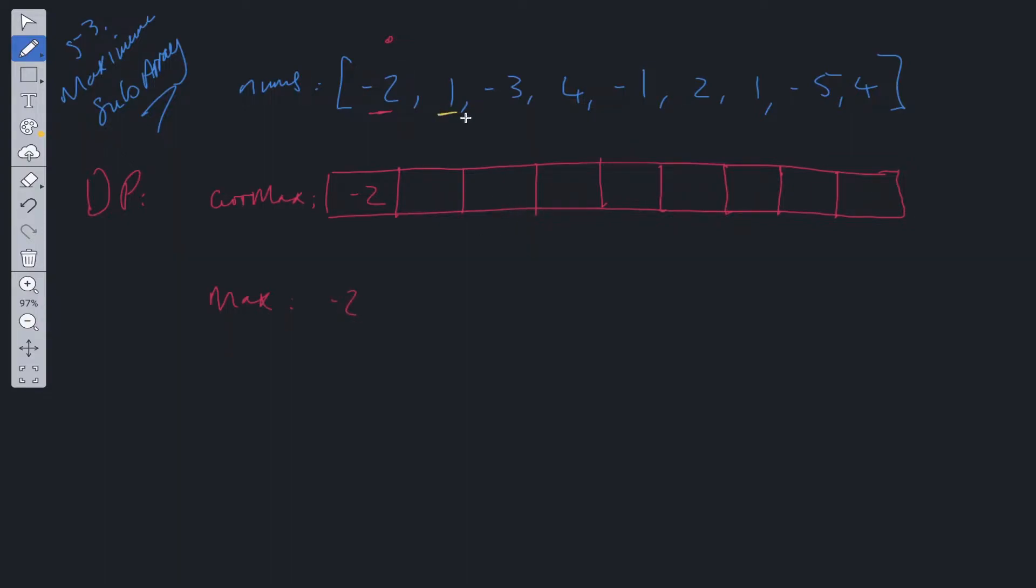If we move on to the next position, the current max here can either be 1, or it can be 1 plus minus 2, because we're using this value to help computate this value. So in this case it's going to be 1, because that's going to be greater, and we're working out the max here, than minus 2 plus 1. So here the maximum will be updated to 1.